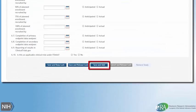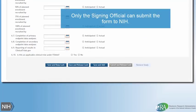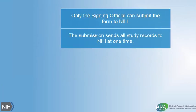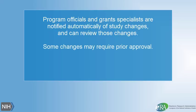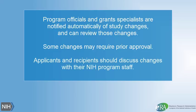Once the changes have been completed and saved, only the signing official can submit the form to NIH. The submission sends all study records associated with the application to NIH at one time. On the NIH side, program officials and grant specialists are notified automatically if a study has been changed or added, and have the ability to review the submission. Keep in mind some changes, including those that involve increased risk to human subjects, may require prior approval. Applicants and recipients should discuss such changes with their NIH program official.